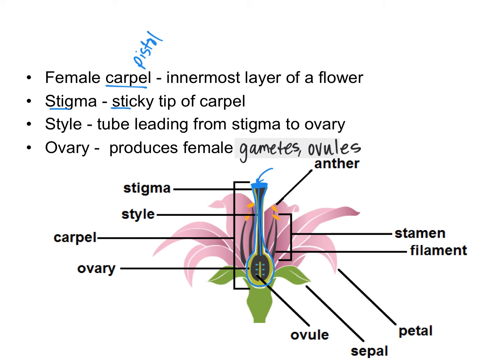Ovules are the female gametes — they will go on to produce an egg which can be fertilized. When fertilized, the ovary will go on to become a fruit, and the ovules will go on to become the seeds of the fruit.